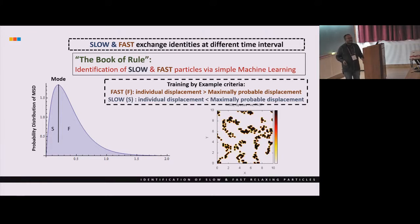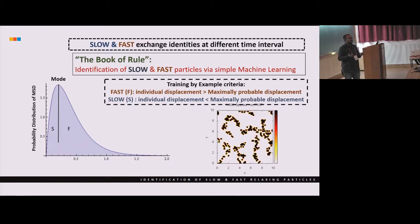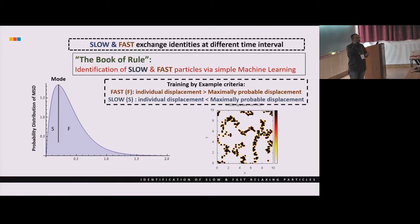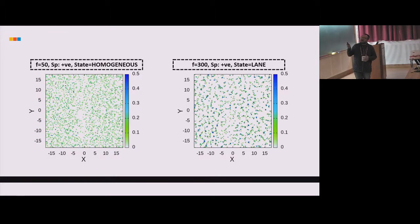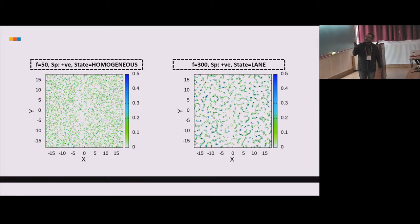The machine has got some rules to identify slow and fast particles. It's a very simple way: when these patterns are forming every time it actually compares a single particle's displacement with respect to the bulk behavior. If the single particle displacement is larger than the maximally probable displacement at the same time instant it says it's fast, or else it's slow. However these rules are not unique. One can actually change these rules to identify different order information. This is the very first task that we showed.